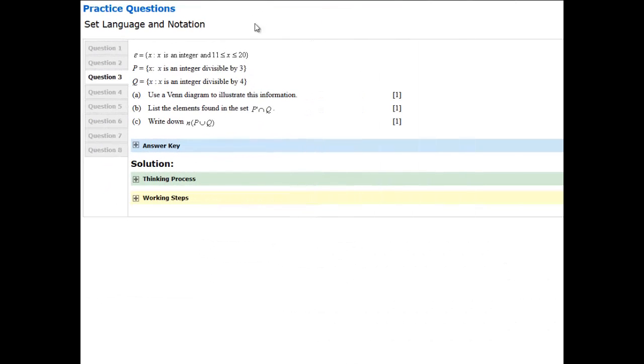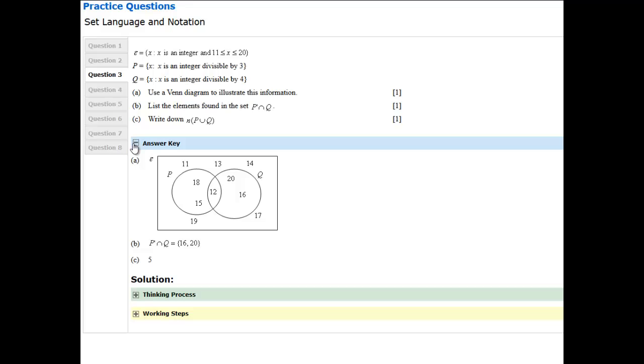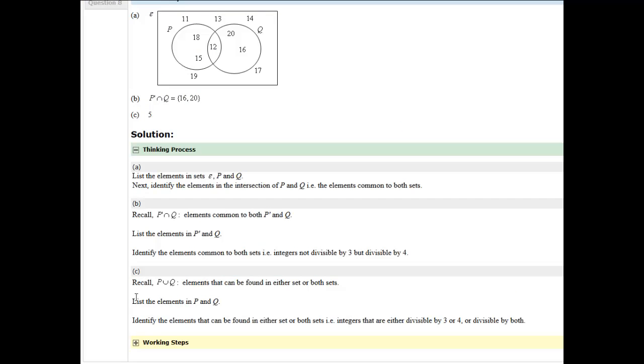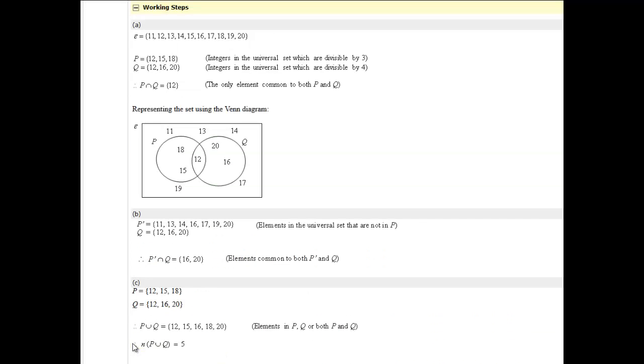In the third segment, practice questions, the student should be able to manage on his or her own. Once the student has solved the problem, he or she may click on the answer key to check his or her answer. If there is a need for a little help, the students may click on thinking process. If he or she desires to compare solutions, click on working steps.